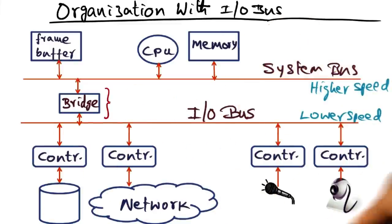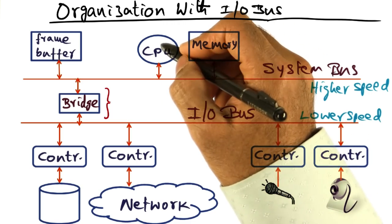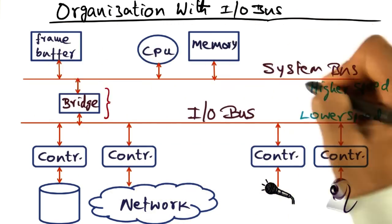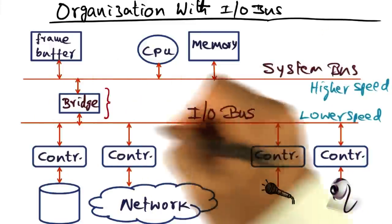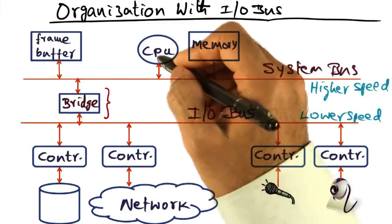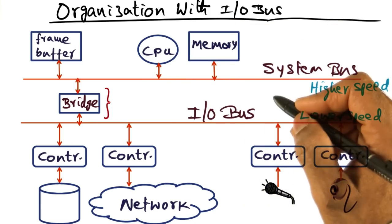And there's going to be a whole number of input output devices, and device controllers that allow these devices to communicate with the CPU or directly with the memory. And there are conduits, system bus and IO bus, for connecting these controllers to the CPU as well as to the memory.